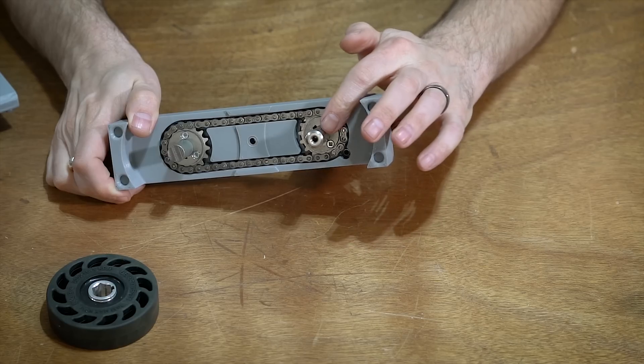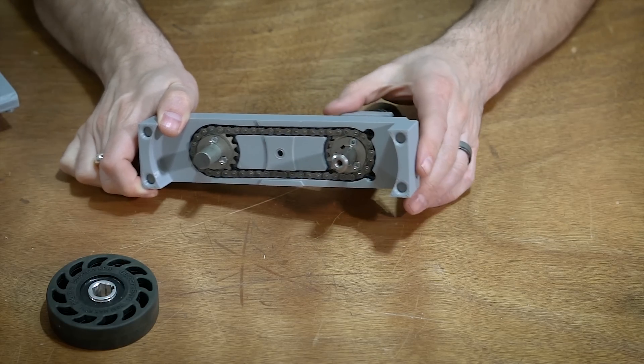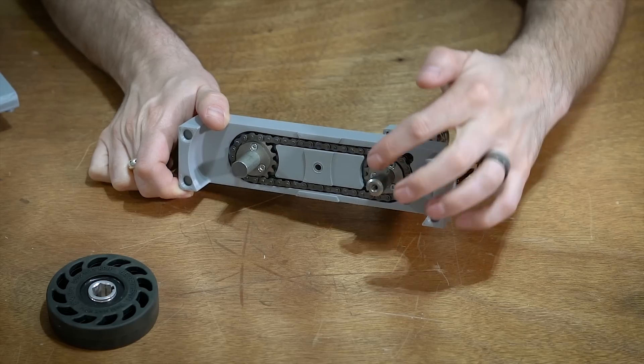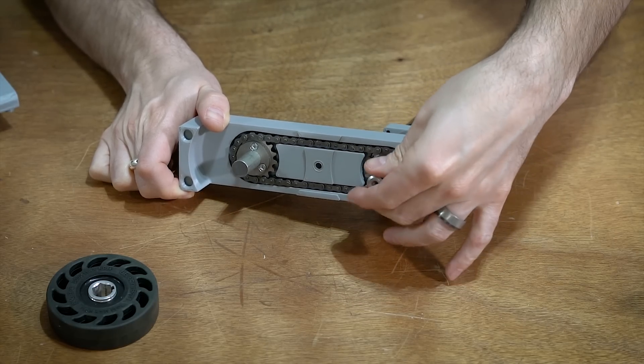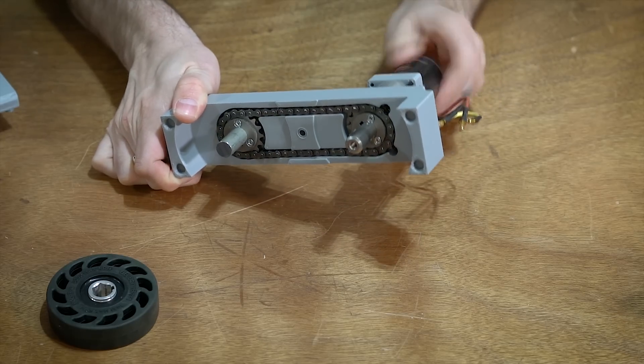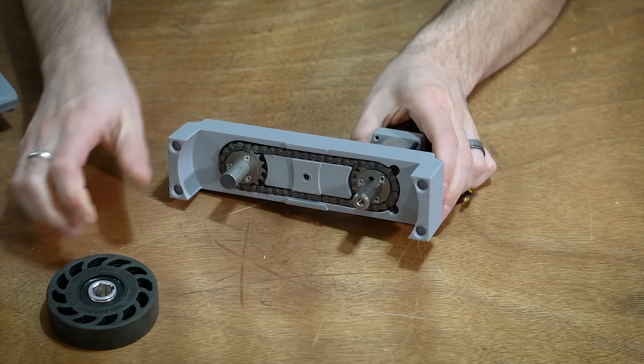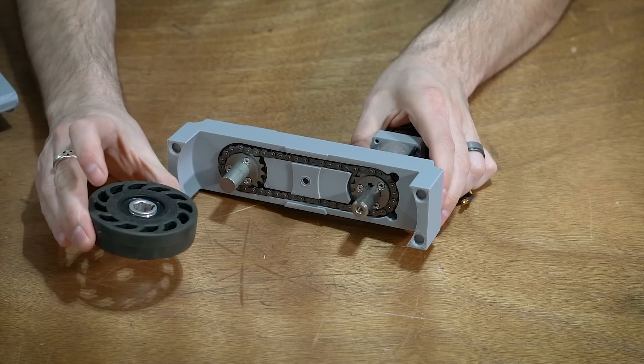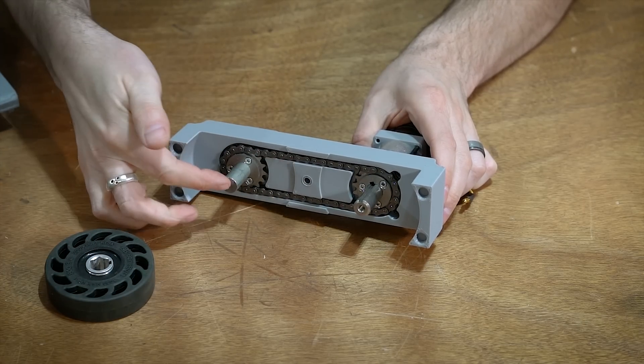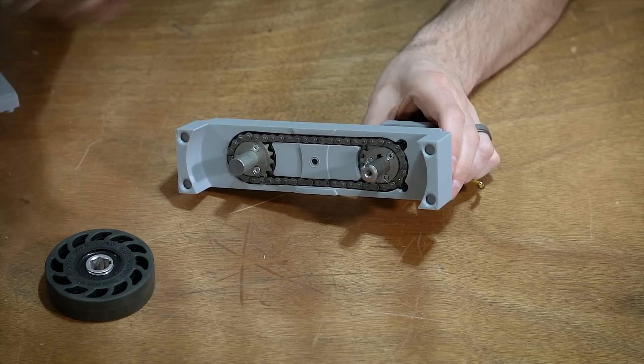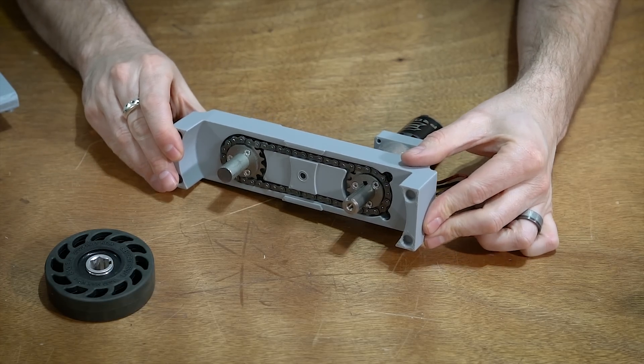And once again, I'm not using any set screws in any of this because I hate set screws. Set screws suck. They always fail. So I'm going to be using the key. So I'm going to be using the key on there, which corresponds to a key in the wheel that drives. Then there's going to be a key in here, which corresponds to the key in the sprocket. And that is how the drive transmission works.